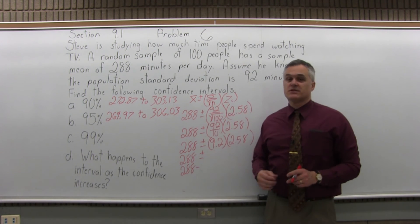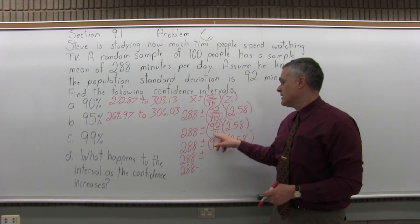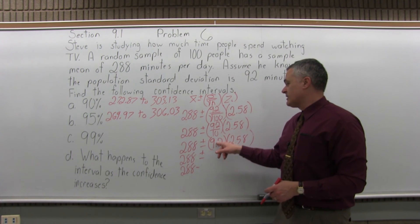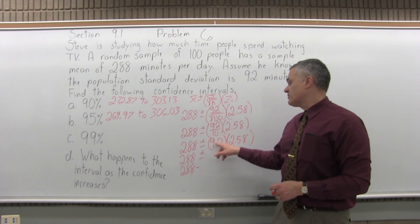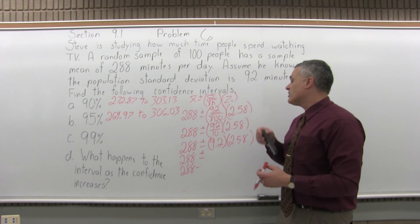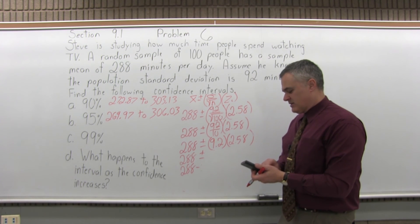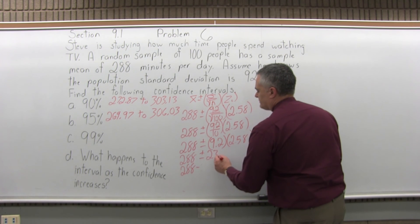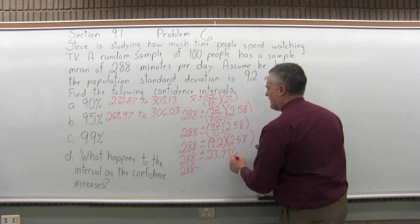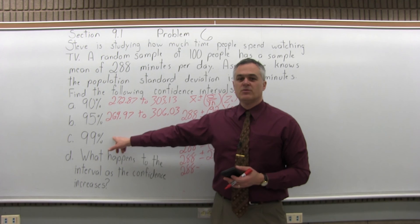The initial steps stay the same. The square root of 100 is still 10, and 92 divided by 10 is still 9.2. Now I multiply 9.2 times 2.58, which gives 23.736. That's the margin of error for 99% confidence interval.